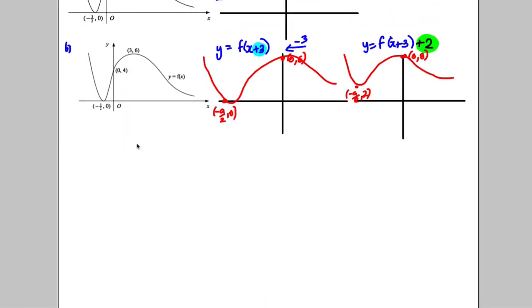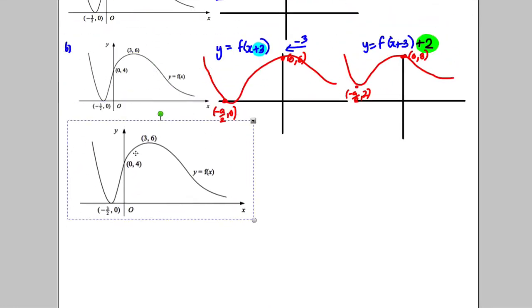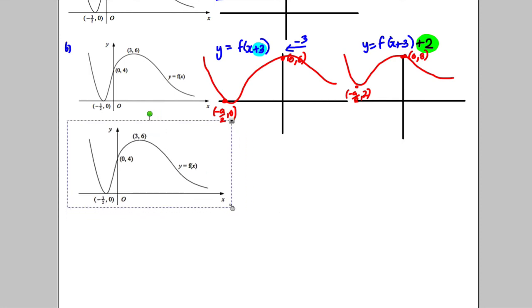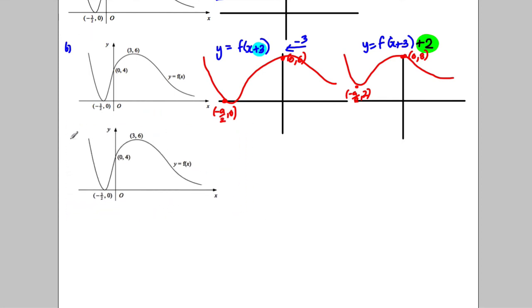Lastly, part C. We're asked to draw y is equal to half f of negative x. So let's firstly just draw a half f of x and then afterwards we'll draw the half f of negative x. What does the half do? Well, the half squashes everything by a factor of half, pushes everything down in the y direction by a half.